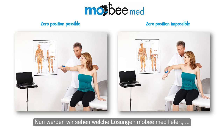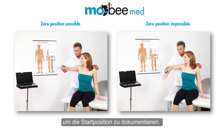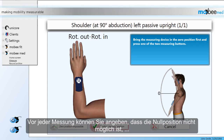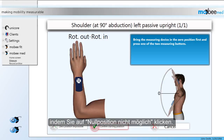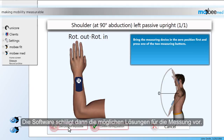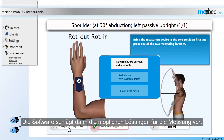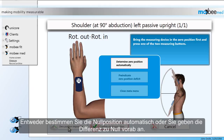Now we are going to take a look at which solutions MobiMid provides in order to document a starting position. Before every measurement you have the option to indicate that the zero position is impossible by clicking on the button 'Zero Position Impossible'. Then the software offers the solutions available for the current measurement. You can either determine the zero position automatically or pre-indicate the zero position deficit.